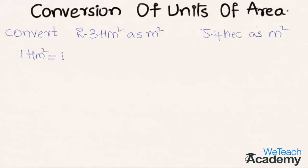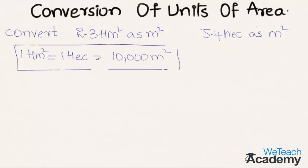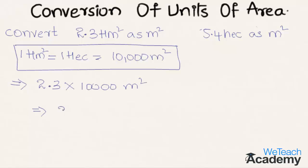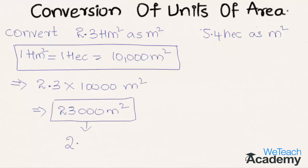In order to convert this, we know that one hectometer square is equal to one hectare, which is also equal to 10,000 meters square. So to convert 2.3 hectometer square to meter square, we multiply 2.3 by 10,000, and we get the result as 23,000 meters square.